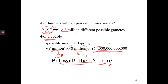Here's a practice question to test your understanding of how meiosis and random assortment work. How many unique gametes can you produce if you have three pairs of homologous chromosomes — six chromosomes in total? I recommend you pause here and draw all the possibilities yourself. If you just look at the answer without doing it yourself, you won't truly understand.